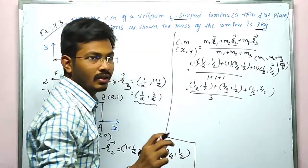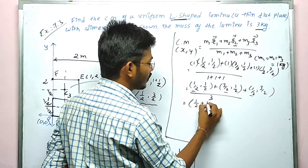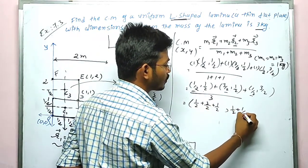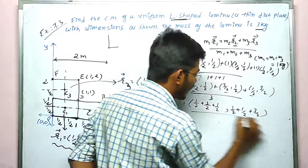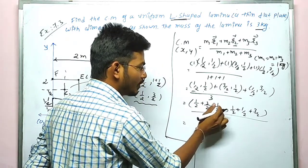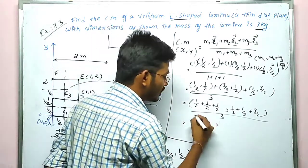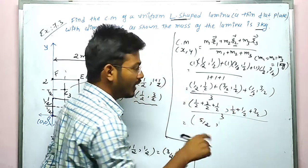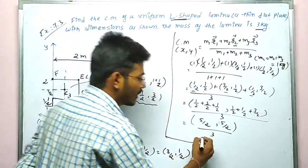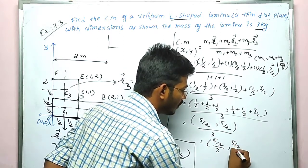Now we add the x-coordinates and y-coordinates separately. For x: 1/2 + 3/2 + 1/2 = 5/2, divided by 3. For y: 1/2 + 1/2 + 3/2 = 5/2, divided by 3. Both simplify to 5/2 divided by 3, which equals 5/6.